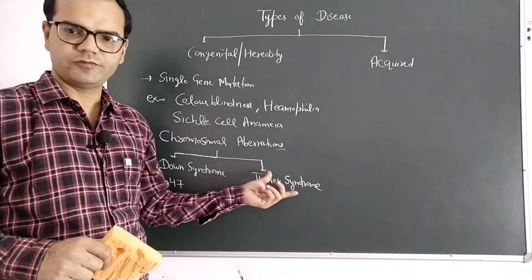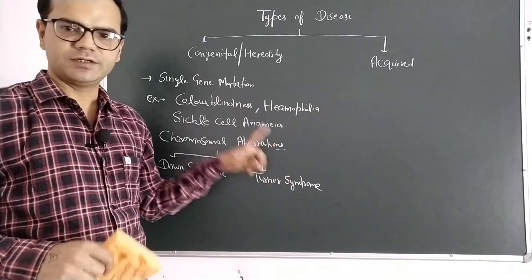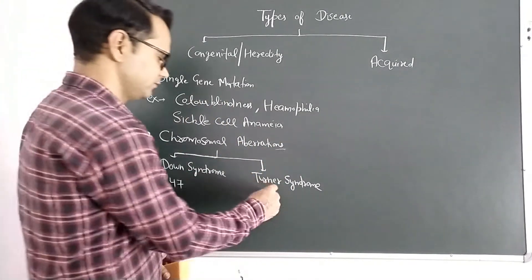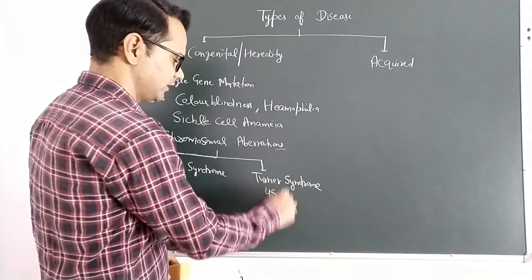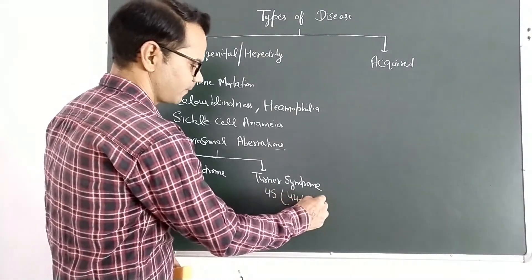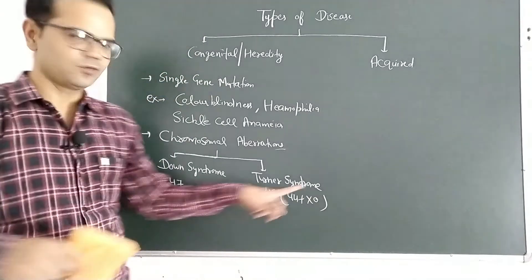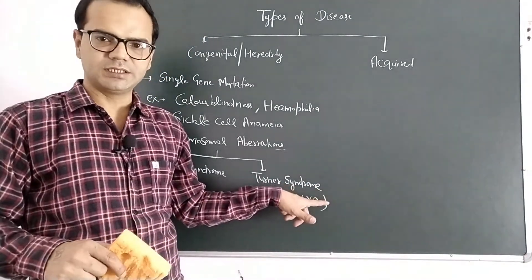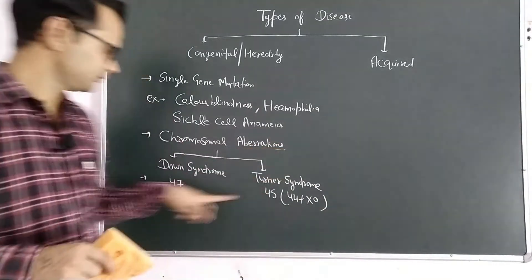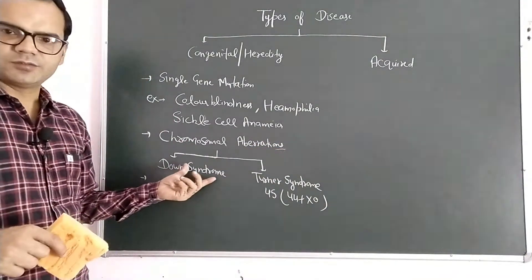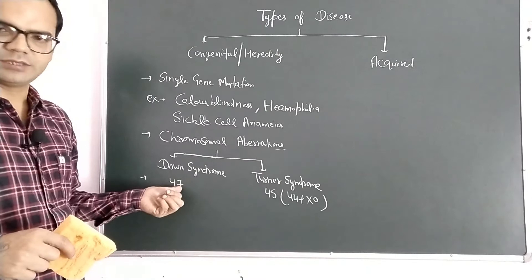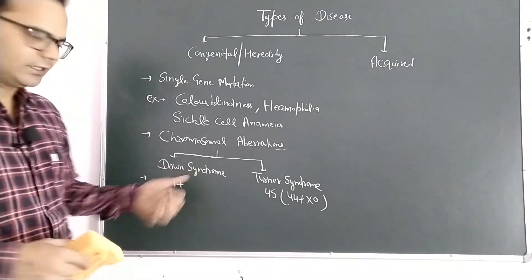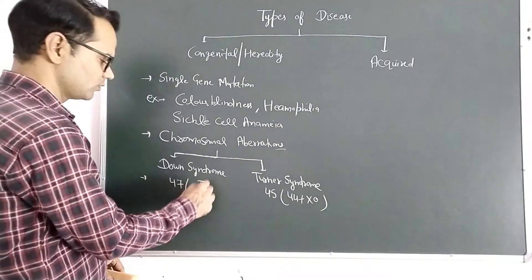The number of chromosomes in Down syndrome is 47. Turner syndrome usually occurs in females — they are missing one X chromosome, so the total number of chromosomes is 45, written as 44 plus X0, meaning the second sex chromosome is missing. Down syndrome occurs due to duplication of chromosome number 21, which is why it is also known as trisomy 21.